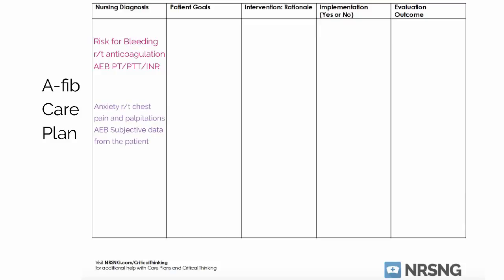The second nursing diagnosis is anxiety related to chest pain and palpitations, as evidenced by subjective data from the patient. The patient is going to tell you that they feel very anxious. A lot of patients with these chest pains and the feeling of their heart beating out of their chest experience the same feeling as when you're very anxious, so many will tell you that they are feeling anxious.